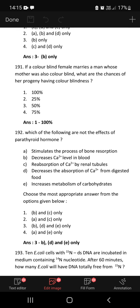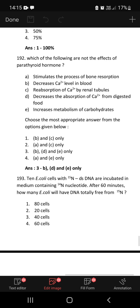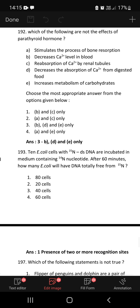Which of the following are not the effects of parathyroid hormone? Parathyroid hormone stimulates the process of bone resorption, that is correct. Decreases calcium level in blood, that is wrong. Reabsorption of calcium ion by renal tubules, that is correct. Decreases the absorption of calcium from digested food, that is also wrong. Increases metabolism of carbohydrates, that is also wrong. So B, D, and E are incorrect statements for the effects of parathyroid hormone.